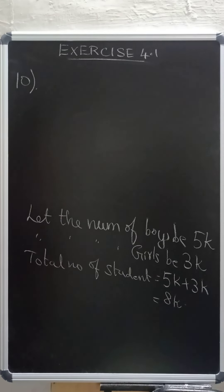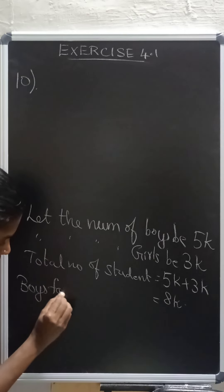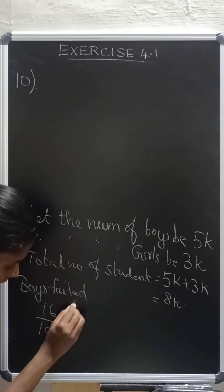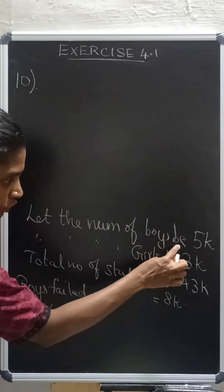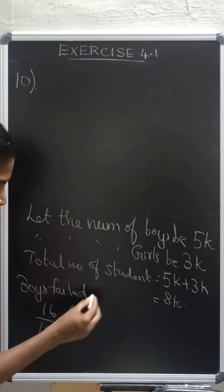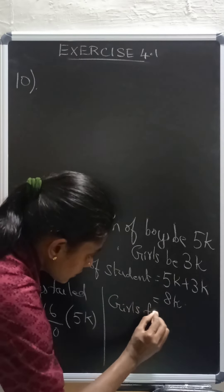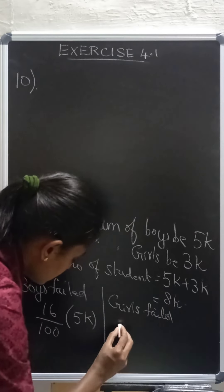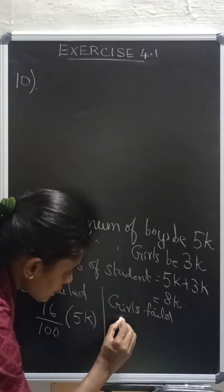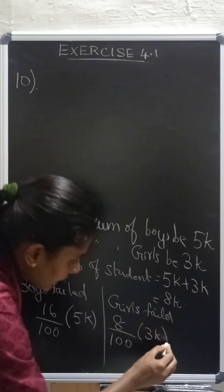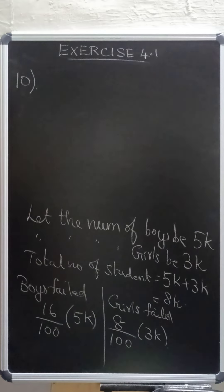Listen carefully. 16% of boys fail, right? So boys fail is 16 divided by 100 into, how much is total number of boys? 5k. Now, girls fail. So that is 8 percentage. So 8 divided by 100 into 3k. Because 3k is the girls. Have you understood this?